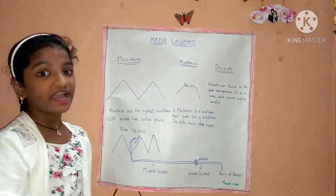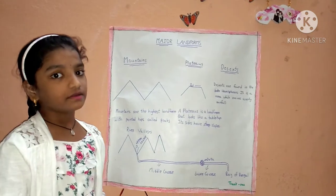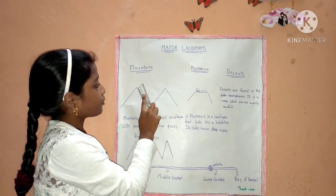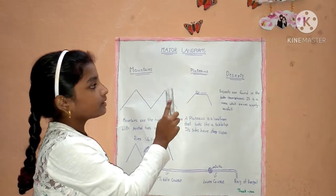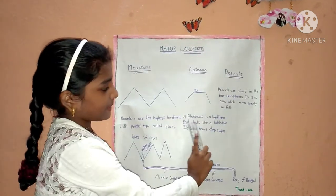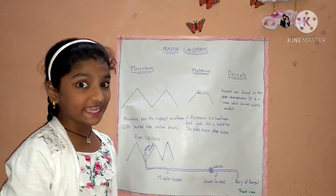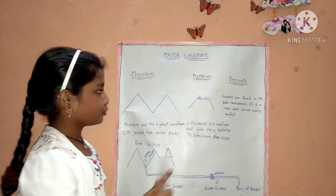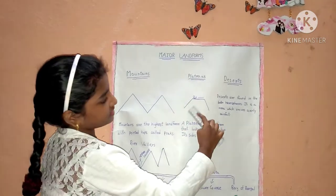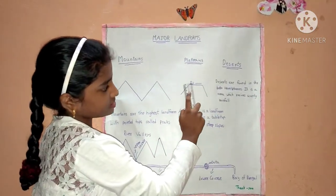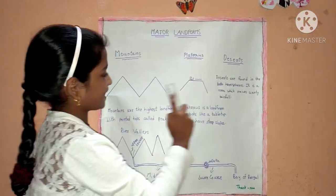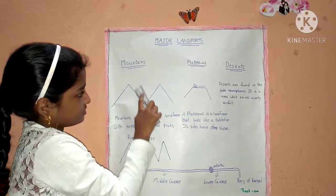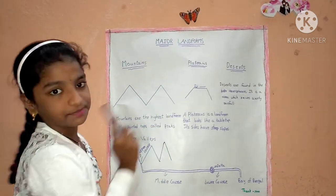Mountains. Mountains are the highest platforms with pointed tops called Peaks. These are the pointed tops called Peaks. Mountains also have steep slopes — these are the steep slopes.